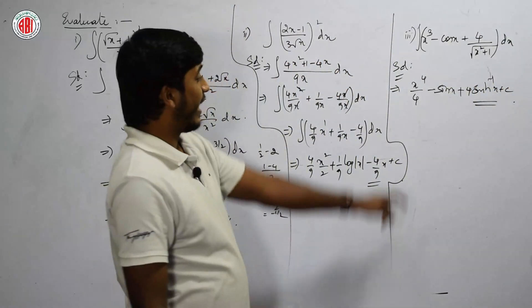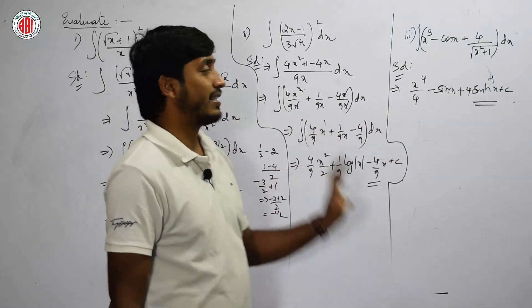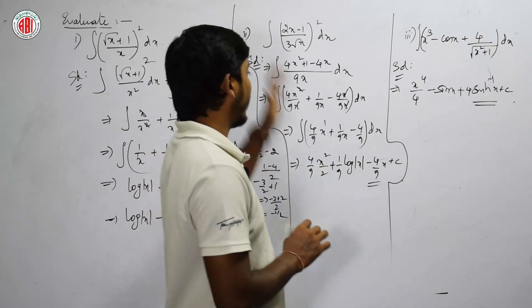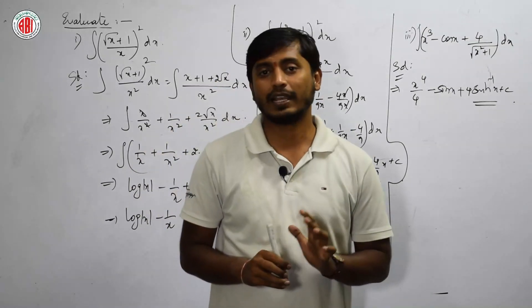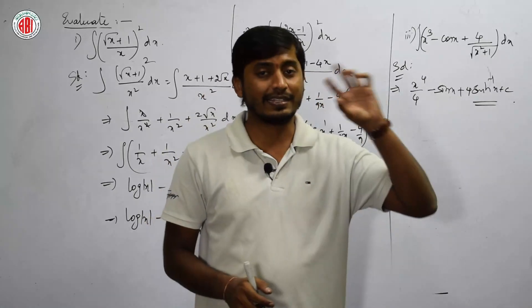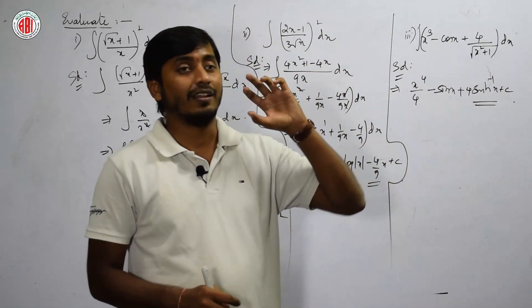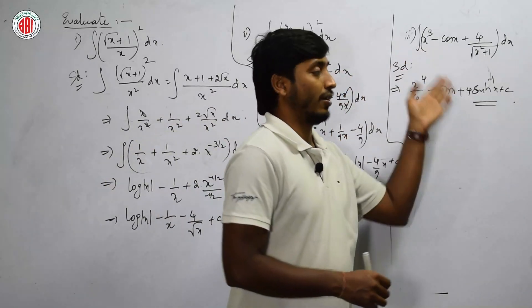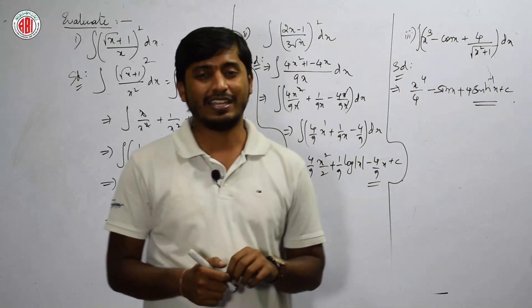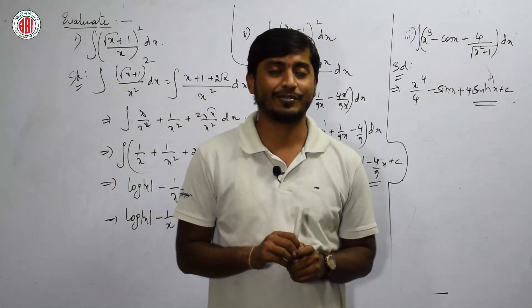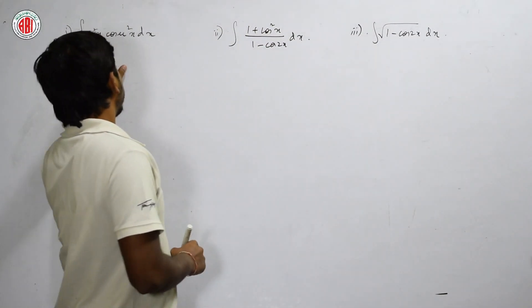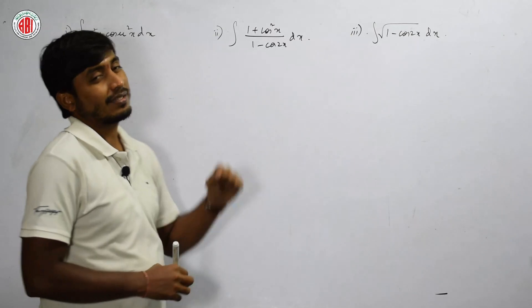We can write direct answers for almost all the questions we have done so far. But in order to make you practice, I am writing each and every step. From the next question, we are going to write directly unless there is a specific transformation needed into integral form. Shall we do a few more problems? Let's do it. The next question asks us to find ∫sec²x · csc²x dx.